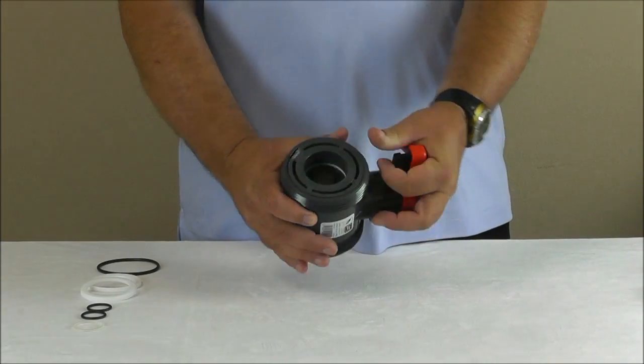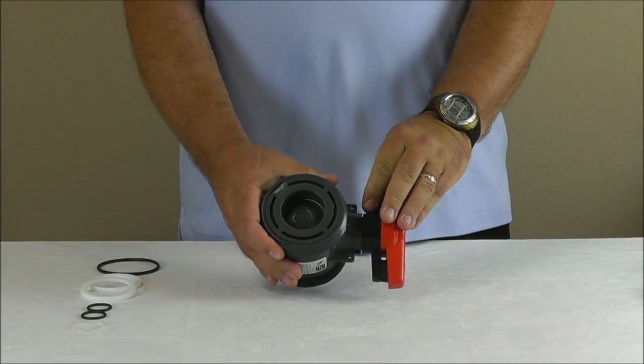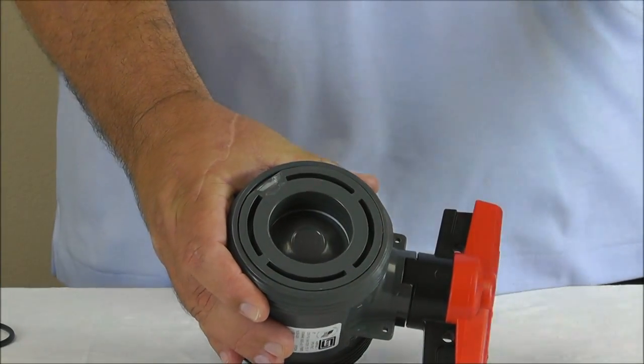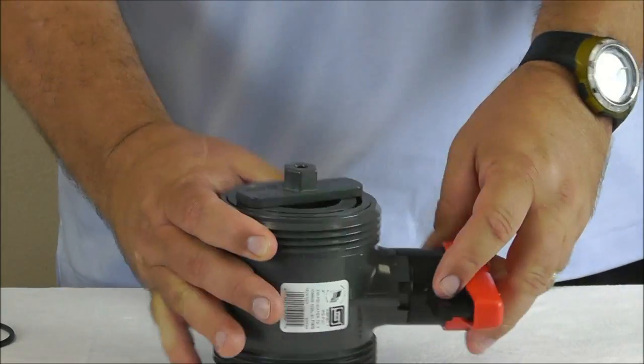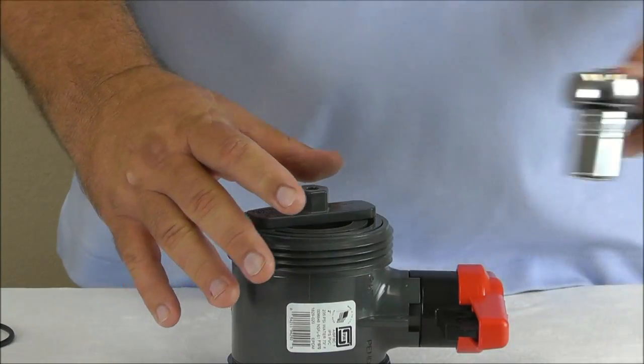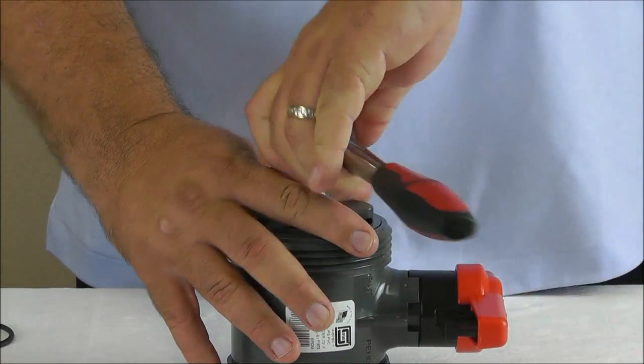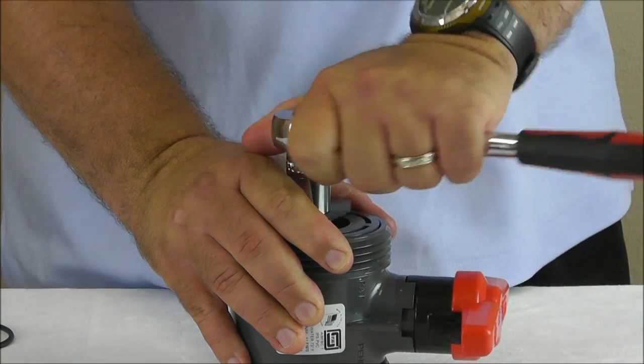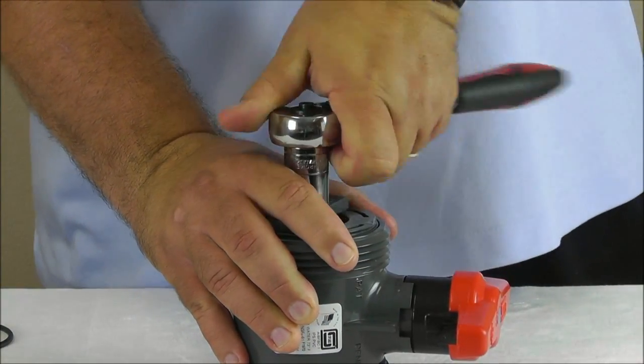Next, turn the valve into the closed position. Insert the seal carrier tool that came with the valve into the slots and using your three quarter inch wrench, unthread the seal carrier counterclockwise while holding the valve body firmly in place. If you no longer have the seal carrier tool, it can be ordered separately along with the seat and seal kit.